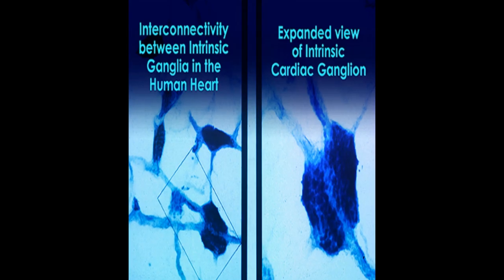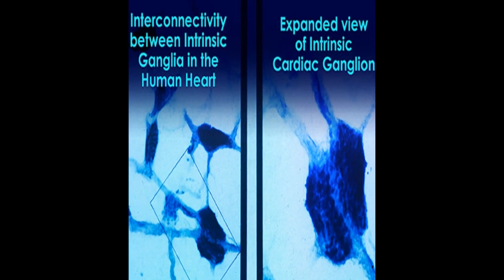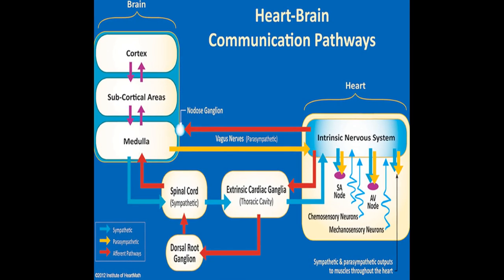The cardiovascular regulation center in the medulla integrates sensory information and input from higher brain centers to adjust heart rate and blood pressure via sympathetic and parasympathetic efferent pathways.